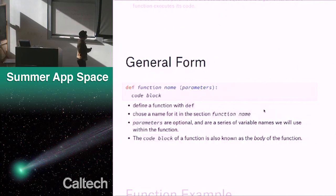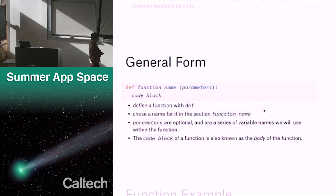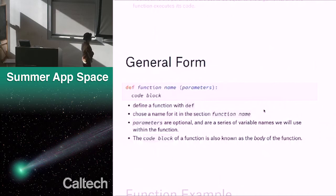A student asks whether you replace the word 'function' or just the name. That's a good question — you replace both 'function' and 'name', so it becomes one word. Anything in italics needs to be replaced. Some students actually put in the greater-than and less-than signs, so replacing both function and name as a combined placeholder makes it clearer.